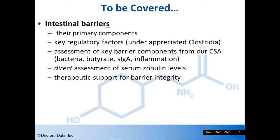Today we're going to talk about the intestinal barriers — with an S — their primary components, key regulatory factors in maintaining the intestinal barriers, including the grossly underappreciated Clostridium species. I'll discuss assessment of key barrier components derivable from a comprehensive stool analysis, looking at specific bacteria, butyrate, secretory IgA, and inflammatory protein markers. Then I'll discuss direct assessment using serum zonulin levels to assess intestinal permeability of the epithelial cell layer, and finally, therapeutic support to maintain barrier integrity.